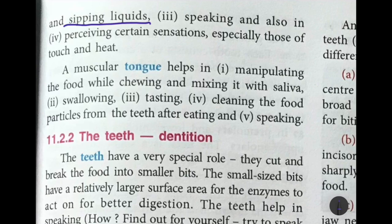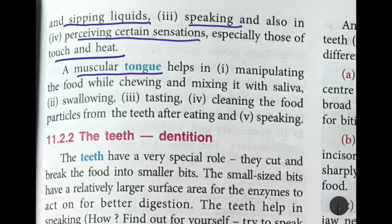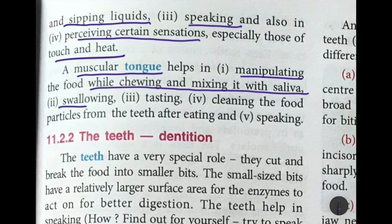The lips also help in speaking and in perceiving sensations like touch and heat — if something is hot, you feel it with your lips. Inside the mouth you have a muscular tongue which helps in manipulating food while chewing and mixing it with saliva. It swirls the food matter, mixes it with saliva, and also pushes the food down to help in swallowing. The tongue also has taste buds for tasting, helps clean food particles from the teeth, and aids in speaking.